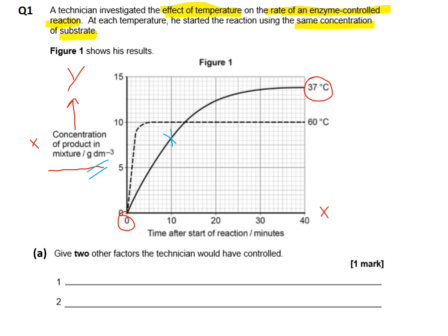In the next tube, the reaction was stopped at 20 minutes and the concentration of product measured. We can see that at 20 minutes at 37°C there's 12.5 grams per decimetre cubed. The same was done for the other tubes at 30 and 40 minutes, and the data was plotted on the graph accurately.